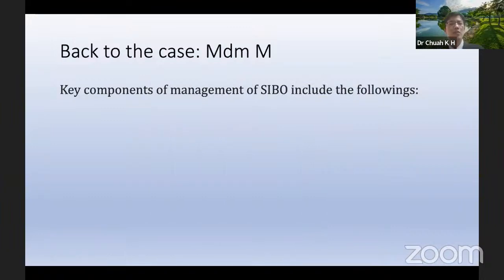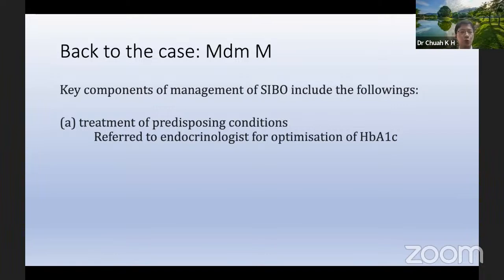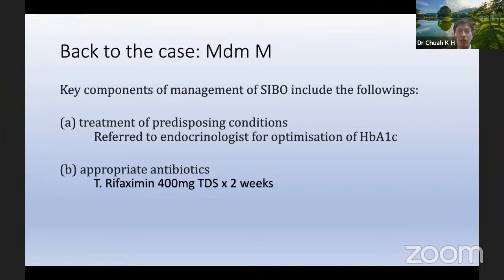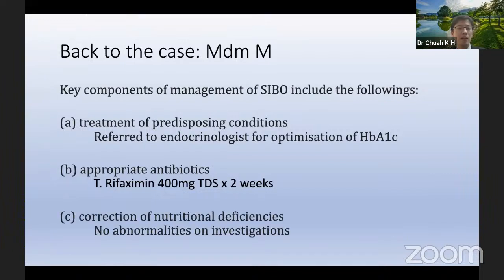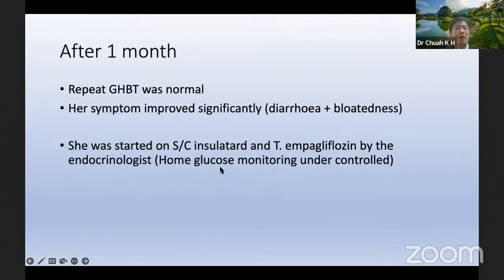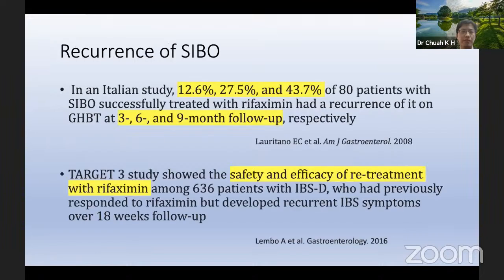Back to the case of Madam M. The key components of management included treating the predisposing condition — I referred her to an endocrinologist for optimization of HbA1c of 10. I started the appropriate antibiotic rifaximin — in our center we have 200mg tablets, so I prescribed 400mg TDS for two weeks — and checked for nutritional deficiency, which was fortunately not present. After one month, I repeated the glucose hydrogen breath test and it was normal. Her symptoms improved significantly. She was also started on a basal-bolus insulin regime and empagliflozin by the endocrinologist, and home glucose monitoring was subsequently under control.